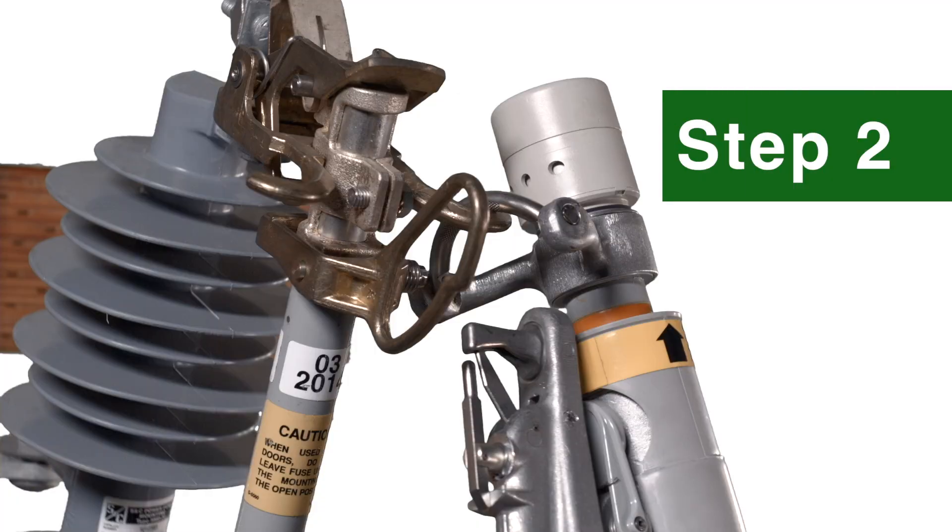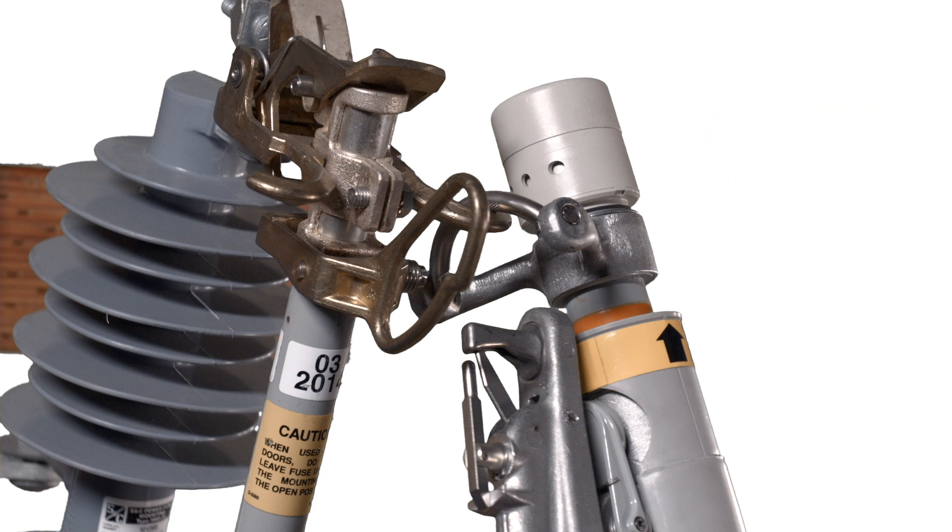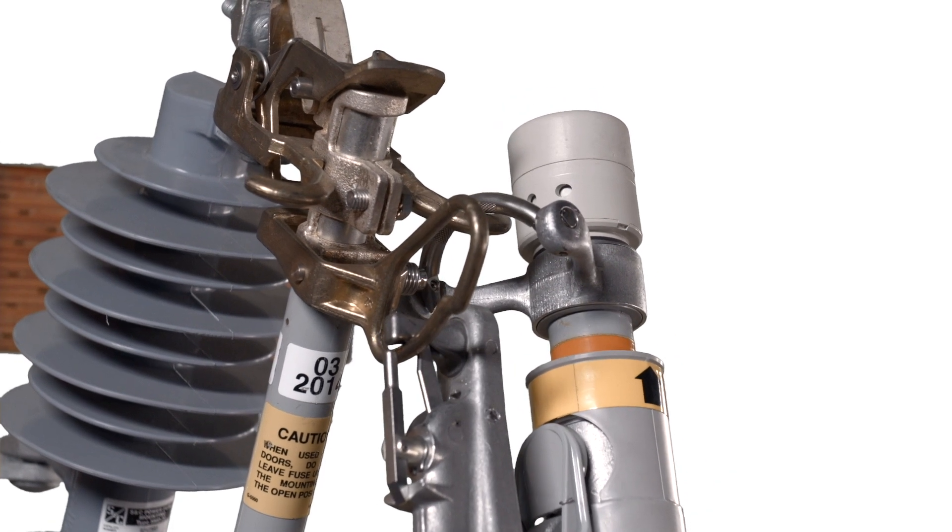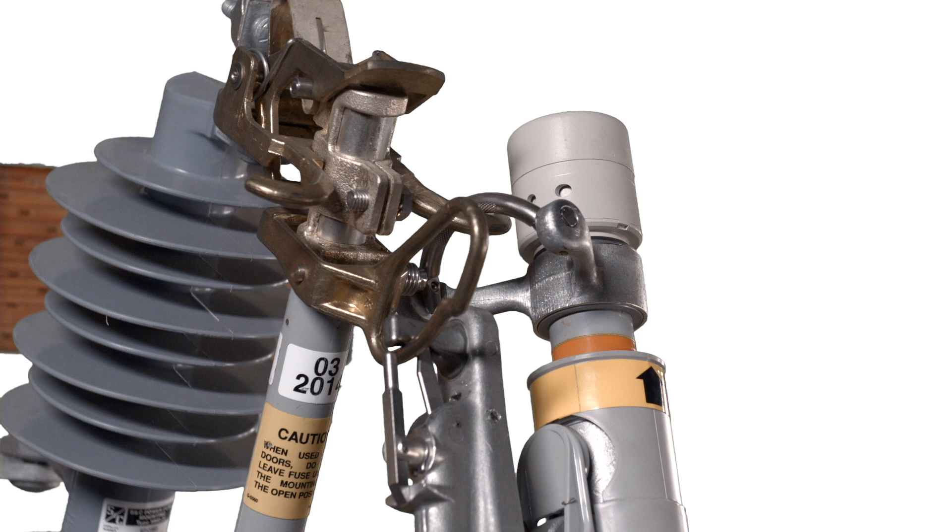Step 2: Swing the Loadbuster tool toward the SMU-20 fuse itself and pass the Loadbuster tool pull ring hook through the pull ring on the fuse. The pull ring latch will deflect and, upon complete entry of the pull ring, will spring back, locking the Loadbuster tool to the pull ring.